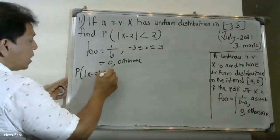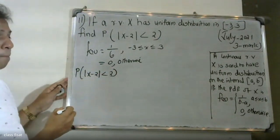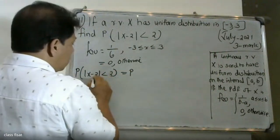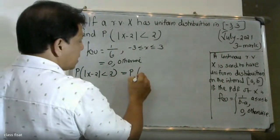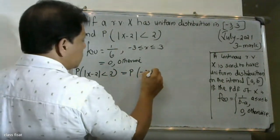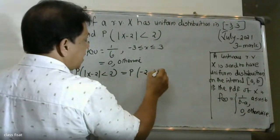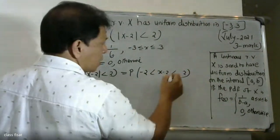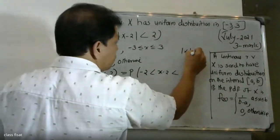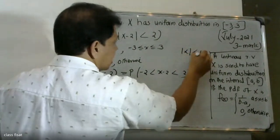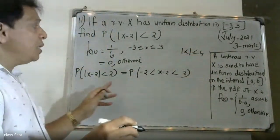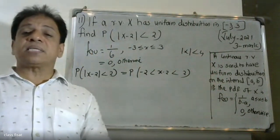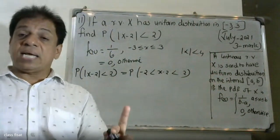Now finding the probability of |X minus 2| less than 2. This gives minus 2 less than X minus 2 less than 2, which means 0 less than X less than 4.